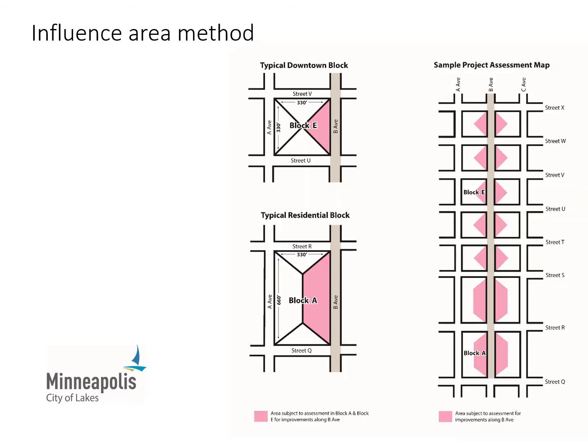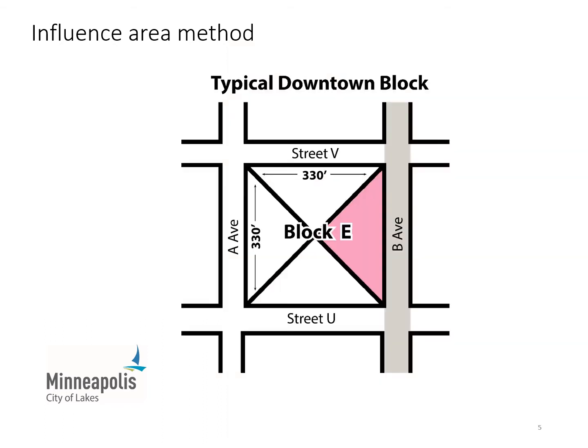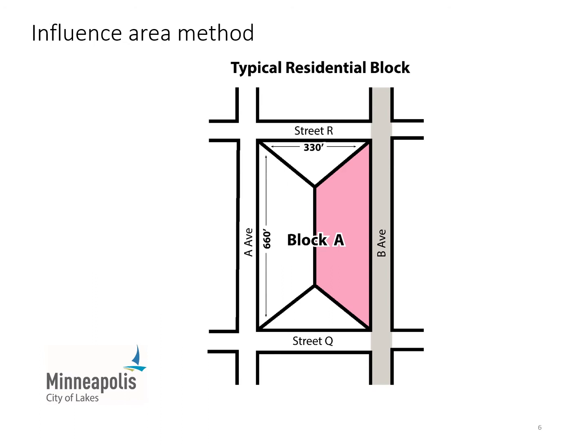The influence area method involves bisecting the angle at each street intersection to create non-overlapping areas of influence. Doing this creates four triangular influence areas in a typical downtown block, like the example on this slide, and trapezoidal and triangular shapes in a typical residential block, like the example on this slide.